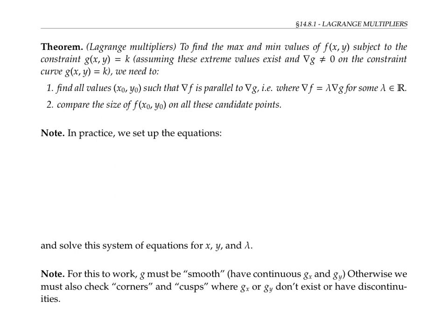Written out in more technical language, the theory of Lagrange multipliers is as follows: to find the maximum and minimum values of a function f(x, y) subject to the constraint g(x, y) = k, assuming that these extreme values exist and that the gradient of G is not zero on the constraint curve, we need to find all points (x₀, y₀) such that the gradient of F is a constant multiple of the gradient of G, and compare the values of our function at all these candidate points.